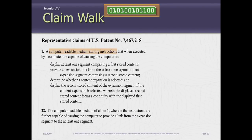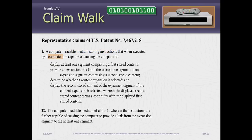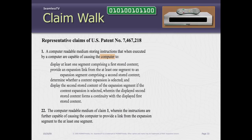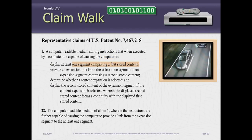People sometimes get confused that Monkey Media has technology — software, hardware, services that we're selling. What we have are patents. We have the technology of the patents and the methods that require licenses. So we start with 'computer readable medium storing instructions' — something stored in memory — that when executed by a computer (any set-top box or other device is a computer), is capable of causing that computer to display at least one segment of first stored content, which was the short-form ad in this example, and to provide an expansion link from that segment.